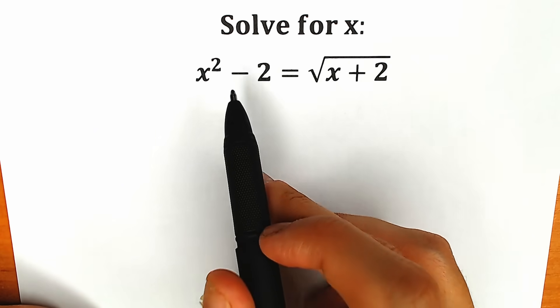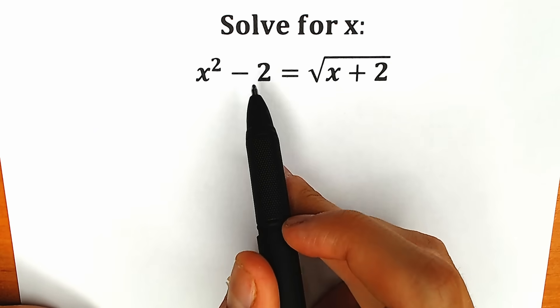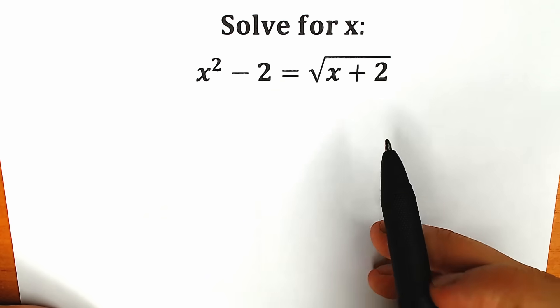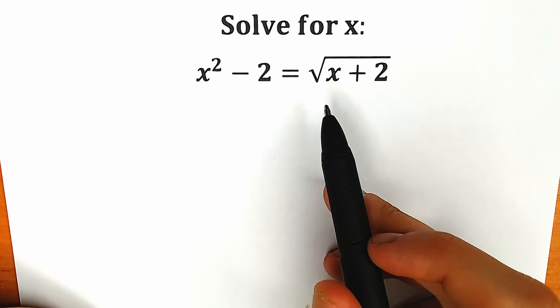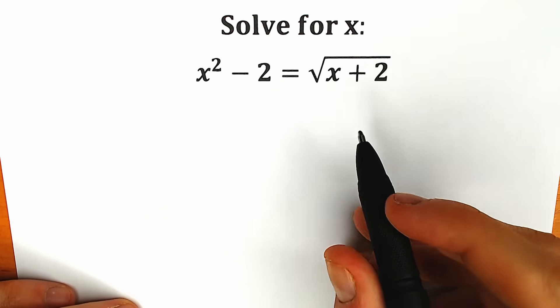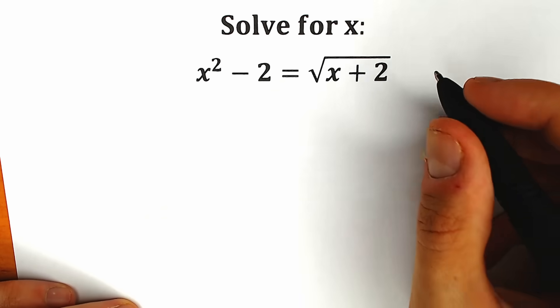On the first side it looks like a very easy question: x²-2 equal to square root of x plus 2, and we need to find our x. If you have your solution, your answer, you can also write your solution down into the comment section.